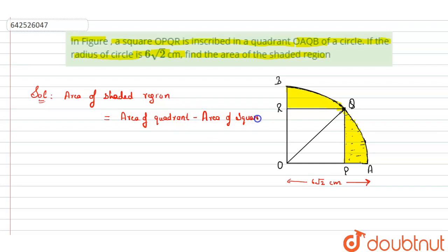First we'll find the area of quadrant and area of square. As the radius of the quadrant or radius of the circle is given to us as 6√2 centimeters, area of quadrant OAQB is πr²/4.